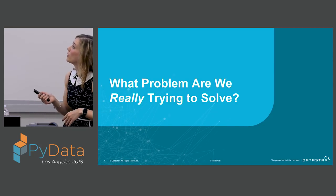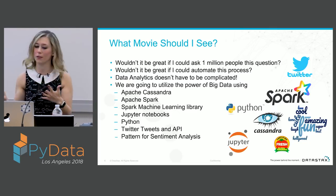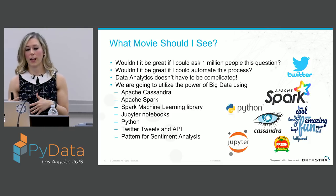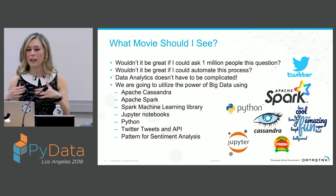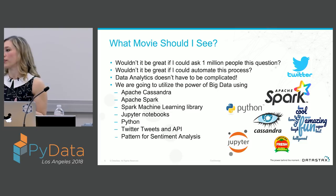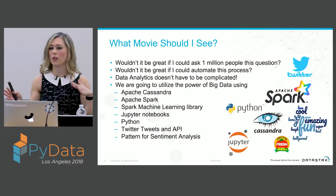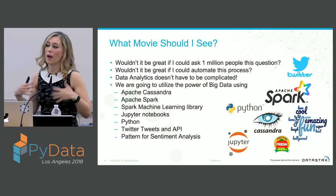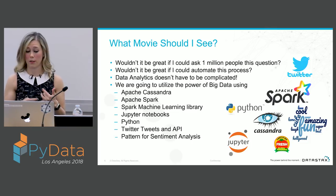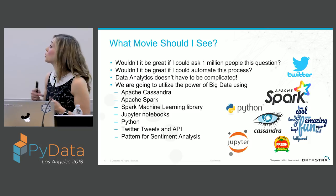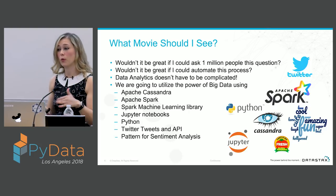So what problem are we really trying to solve? What movie should I see? That's the overarching question. Wouldn't it be great if I could ask one million people this question and automate this process? Data analytics does not have to be complicated. It can just be something as simple as text analytics on Twitter tweets. We're going to utilize the power of big data with Apache Cassandra, Apache Spark, Spark machine learning libraries, Jupyter notebooks, Python, Twitter tweets and the Twitter API.